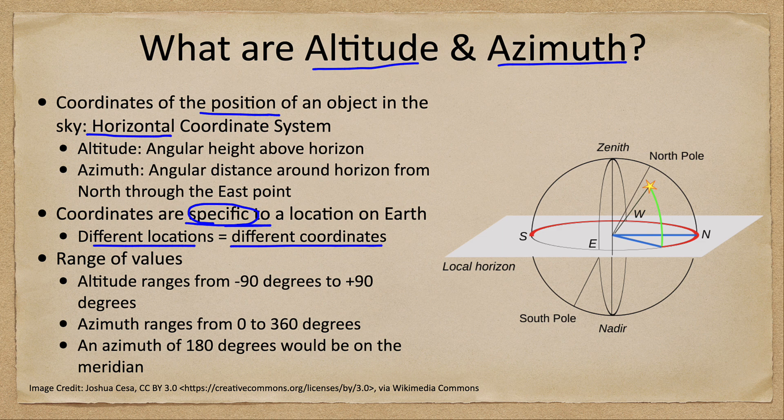When you specify an altitude and azimuth, you also have to specify what location you are observing from, and the values will also change over time. The altitude of the sun when it rises would be zero, it will get higher in the sky reaching a higher altitude, and then it would set, reaching zero again. So they're very specific to the location and the time.